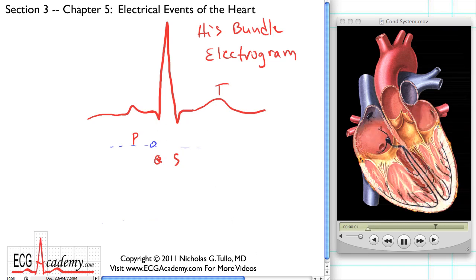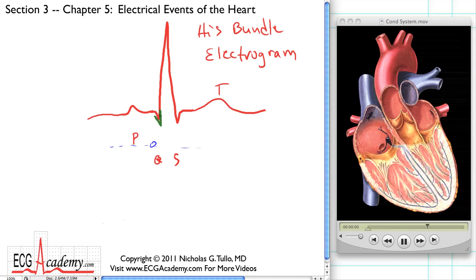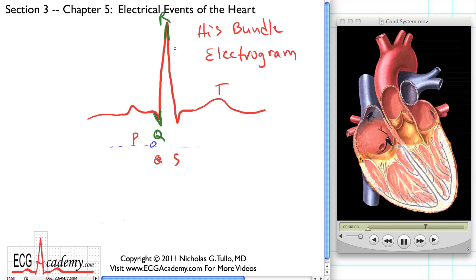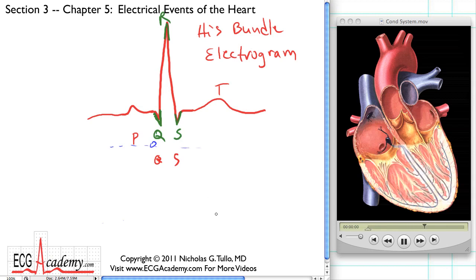So what part of the QRS is the Q, the R, and the S? It's very simple. The first downward deflection that occurs during ventricular depolarization is known as the Q wave. Following the Q wave, the next upward deflection is known as the R wave. And if there happens to be another downward deflection following the R wave, that is known as the S wave.